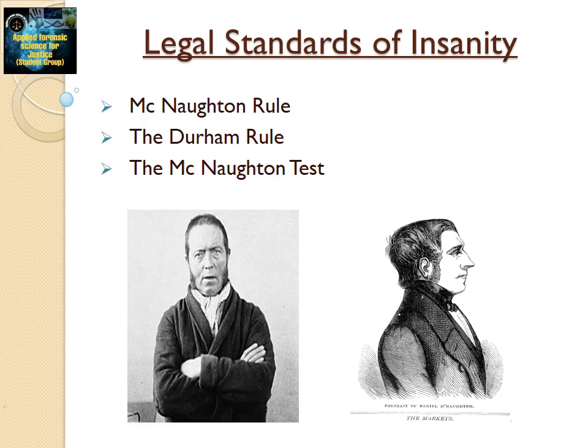Legal Standards of Insanity. 1. The M'Naghten Rule states that in order to establish insanity, it must be proven that at the time of the crime the accused had a mental disease such that he or she did not know the nature or quality of their act, or did not know that what he or she did was wrong. 2. The Durham Rule states that the accused is not criminally responsible if his or her unlawful conduct was the product of mental disease or defect. 3. The M'Naghten Test, also known as the right-wrong test, holds that a person was not criminally responsible if at the time of the crime he or she did not know the nature of the act, or that it was wrong.